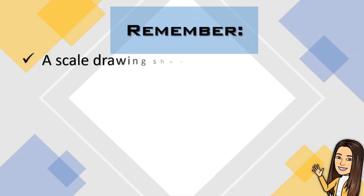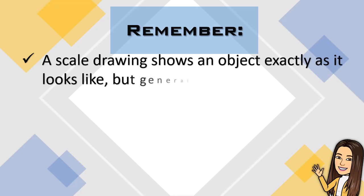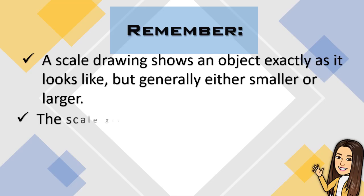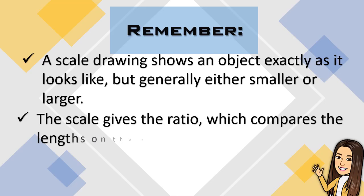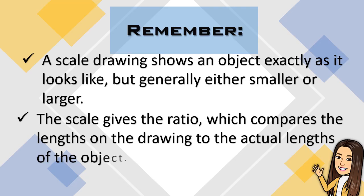Remember, a scale drawing shows an object exactly as it looks like, but generally either smaller or larger. The scale gives the ratio, which compares the lengths on the drawing to the actual lengths of the object.